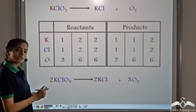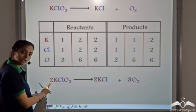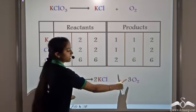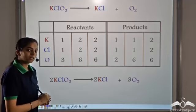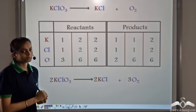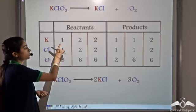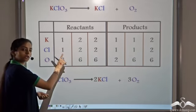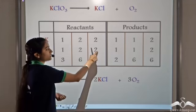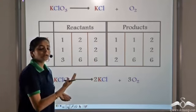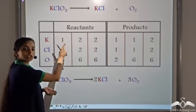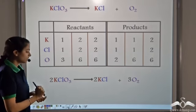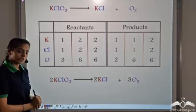Now if we look at our equation, we have 2 atoms of Potassium — Potassium is balanced, Chlorine is balanced, and Oxygen is balanced. What we did was multiply the reactant side by 2 and the product Oxygen by 3. We started with 1 Potassium atom and 1 Chlorine atom, and in the end we get 2 atoms of both — we have doubled the number of atoms originally present. This is our balanced chemical equation.